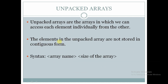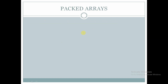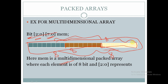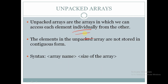Coming to unpacked arrays, we can access each element individually from the others. In the case of packed arrays, we cannot access an individual element separately. If we want to access the second element, we have to go through a forward loop and access the second element after the first. To access the third element, we have to extract the first two elements first. In unpacked arrays, that is not the case — each element is independent of the others, and we can access each element individually.